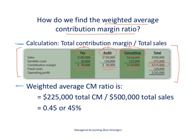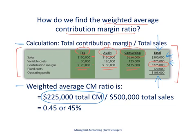To find the weighted average contribution margin ratio, we need the total information for the company. We take the total contribution margin of $225,000 and divide that by total sales of $500,000. That gives us a weighted average contribution margin ratio of 45%, and we need that to find the break-even point in sales dollars.